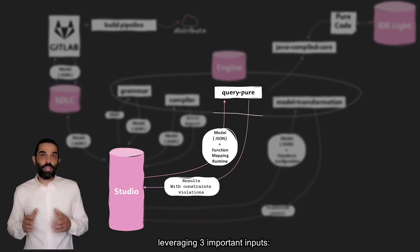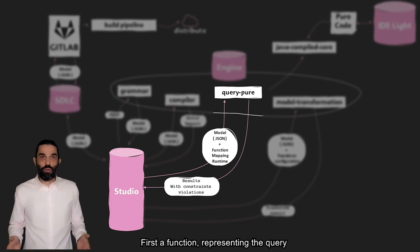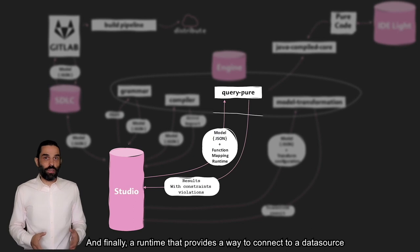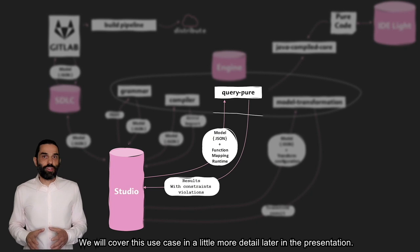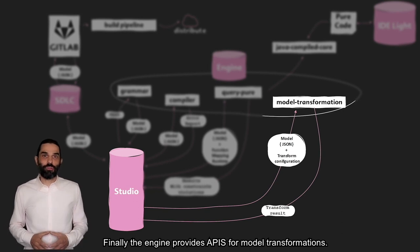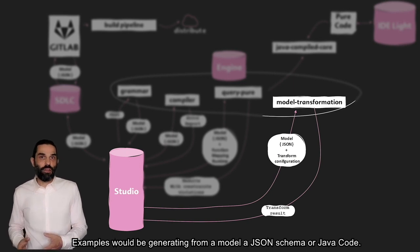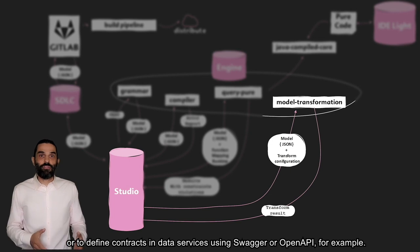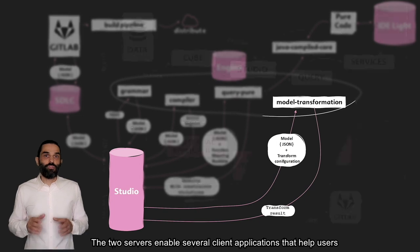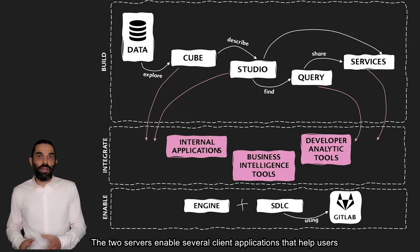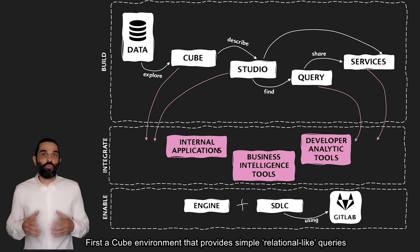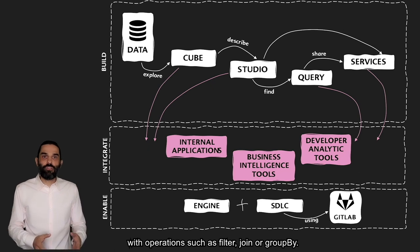The engine also provides a compilation API that provides feedback about errors that could have been made during code writing. Another important engine feature is to provide query execution leveraging three important inputs: first, the function representing the query, then a mapping that maps types expressed in the query to elements of a data source, and finally a runtime that provides a way to connect to a data source. Finally, the engine provides APIs for model transformation. An example would be generating from a model a JSON schema or Java code. JSON schemas can be leveraged to validate serialization or to define contracts in data servicing using Swagger or OpenAPI, for example. The two servers enable several client applications that help users during their journey working with data. First, a Cube environment that provides simple relational-like queries with operations such as filter, join, or group by.